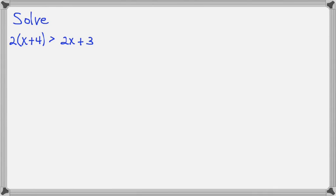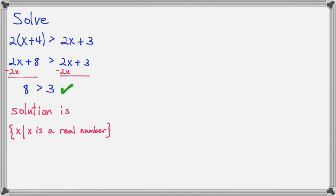So let's solve 2 times x plus 4 is greater than 2x plus 3. If you distribute and subtract 2x from both sides, you're left with no variables. And so if you have 8 is greater than 3, well, that's a true statement. That means that every x you could think of will check in this original inequality. And that means that the solution is the set of all x's such that x is a real number.